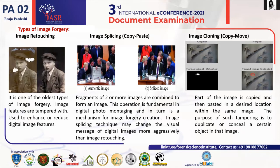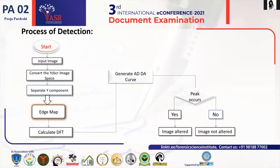The second type is image splicing, the copy-paste method. It is a commonly used simple forgery technique that crops and pastes regions from the same or separate sources. It is a type of photographic manipulation involving computerized splicing of at least two pictures into a single composite picture. The third type is image cloning, or copy-move forgery, also known as region duplication. It is the most common image alteration method because it is easy and effective for any shape and size.